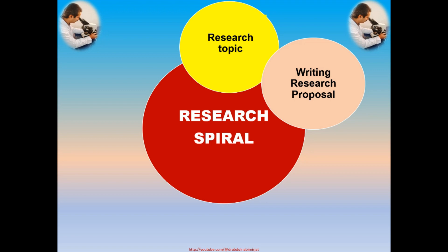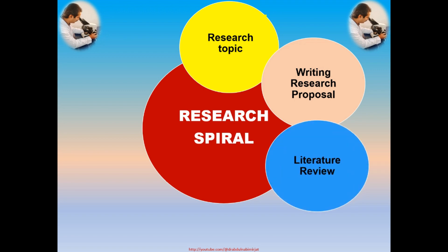After choosing a topic, the next step is the literature review. A literature review is a comprehensive summary of previously published research on a specific topic. It helps increase ideas about the prepared research topic. A literature review can be composed by studying scholarly articles, books, and other sources pertaining to the research topic.